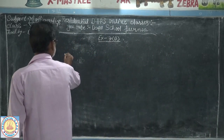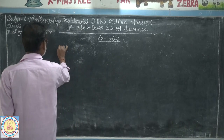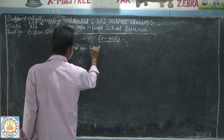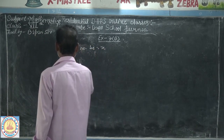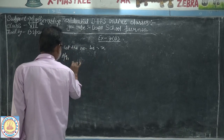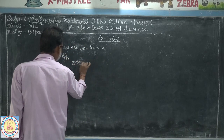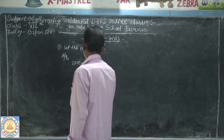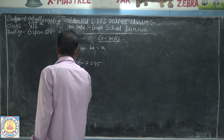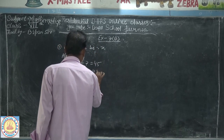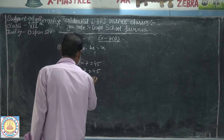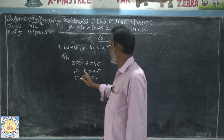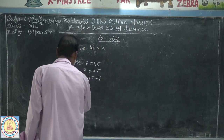Let the number be x. According to the question, twice a number means 2 into x, decreased by 7 means minus 7, gives 45 means equal to 45. So the equation is 2x minus 7 is equal to 45.